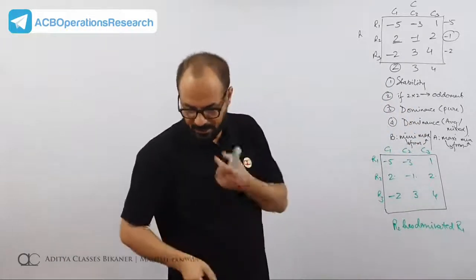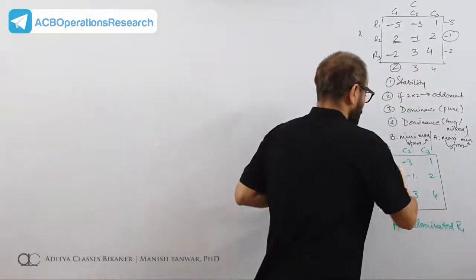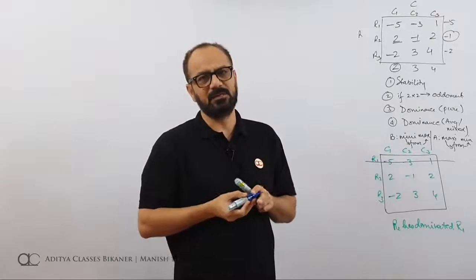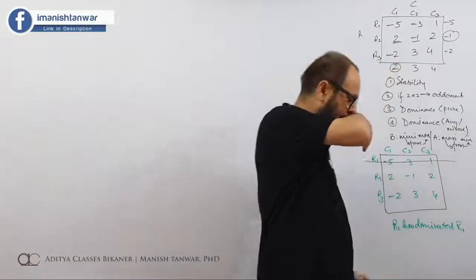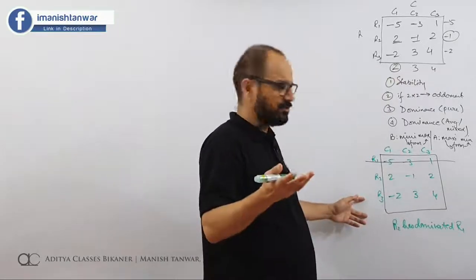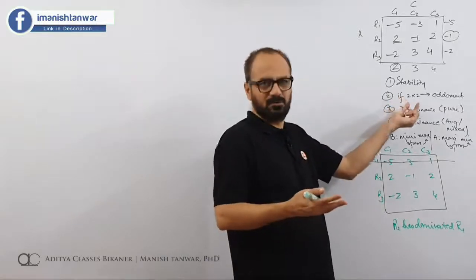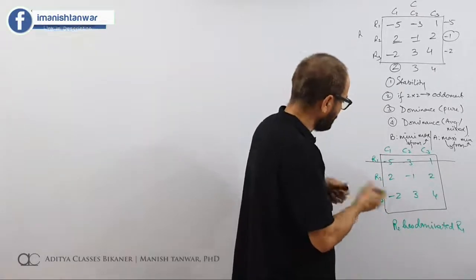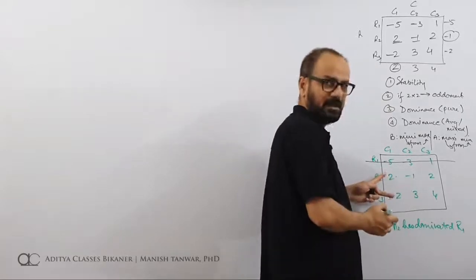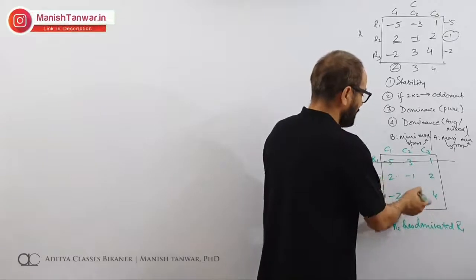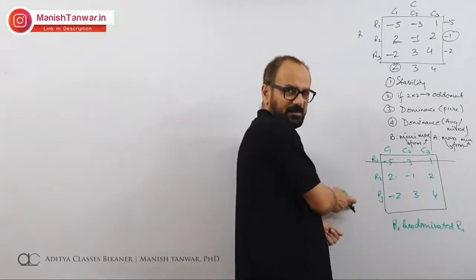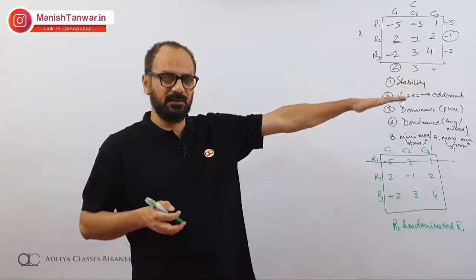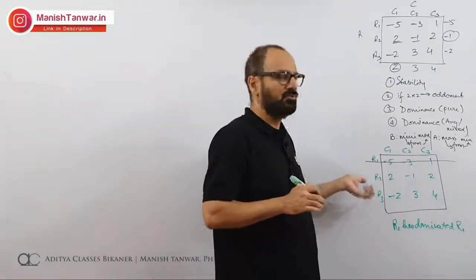Now comparing R2 and R3: from 2 and minus 2, I take 2; from minus 1 and 3, I take 3. At times R2 wins, at times R3 wins, so there is no dominance between them. In any case, we are down to 2 rows, so no worries. We are through with the row inspection.